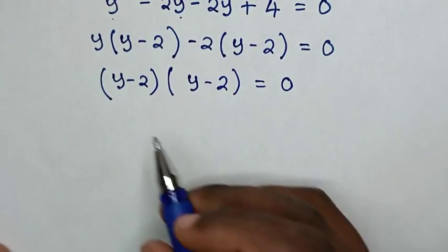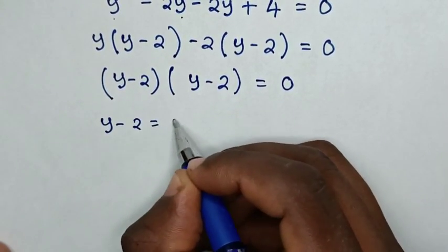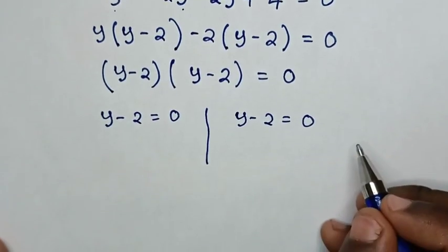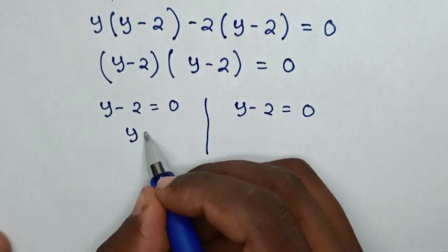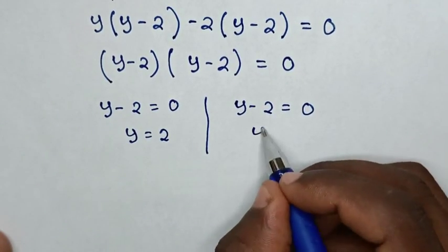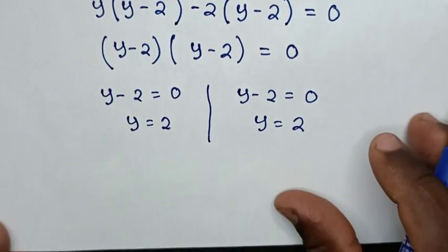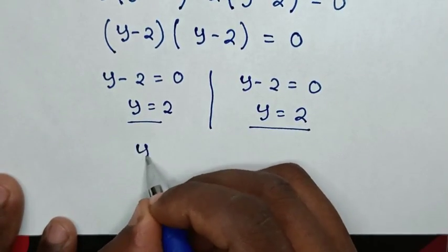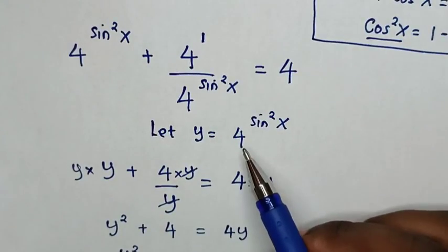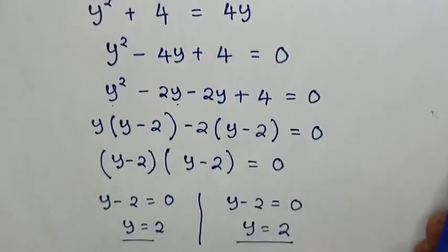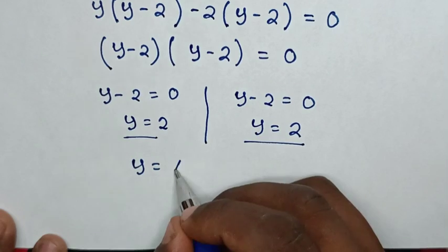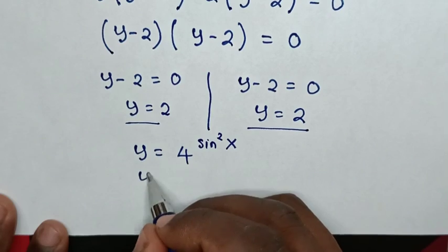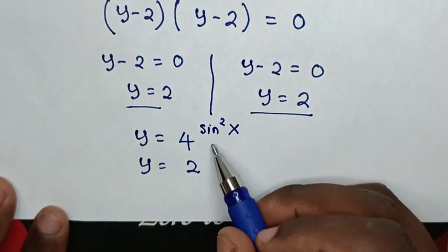In the next step, we have two solutions: y minus 2 equals 0 and y minus 2 equals 0. Taking 2 to the right side in both cases gives y equals 2 and y equals 2. Therefore both solutions give y equal to 2. Since we let y equal to 4 power of sine squared x, we substitute back.